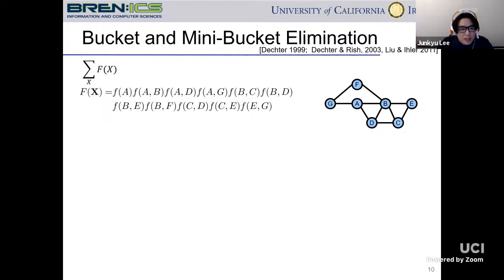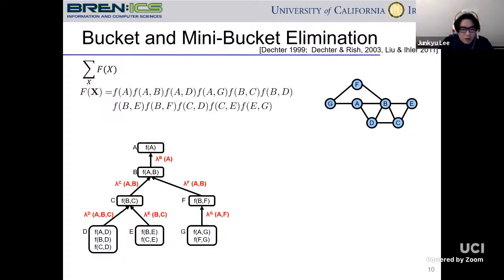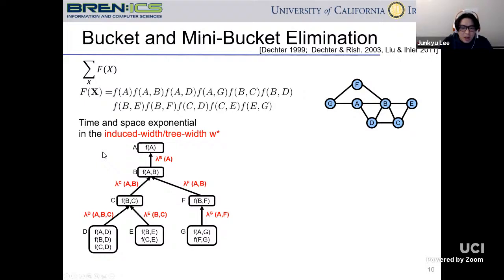Let's begin with the exact method in graphical models. Given a joint function f(x), we combine small local functions by multiplication, and the primal graph captures the dependency between variables. Essentially, we eliminate all variables from the joint function to compute the normalization constant. This procedure can be seen as dynamic programming; variable elimination implements dynamic programming by forming sub-problems or clusters that collect relevant local functions. We can arrange those sub-problems as a tree connected by messages that send intermediate results of the elimination operation. The complexity is captured by the maximum size of the clusters, which is called the tree-width.